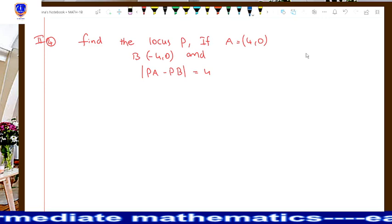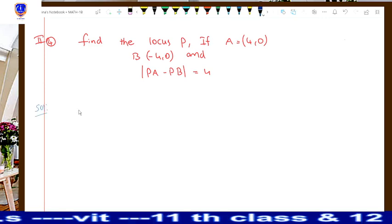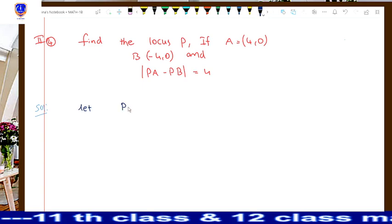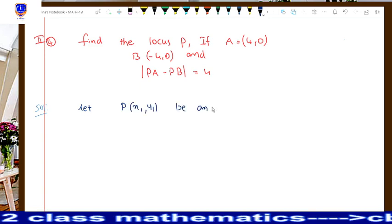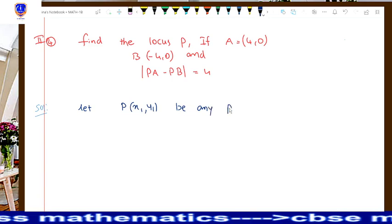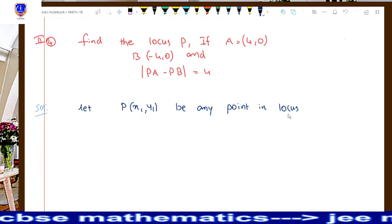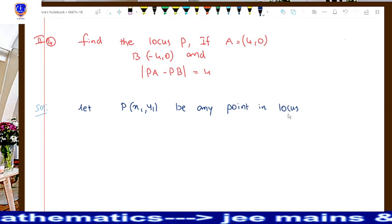Write down the solution. Write down the first step as: let P of (x1, y1) be any point in locus. This is the first step. You have to mention this for all problems in this topic.